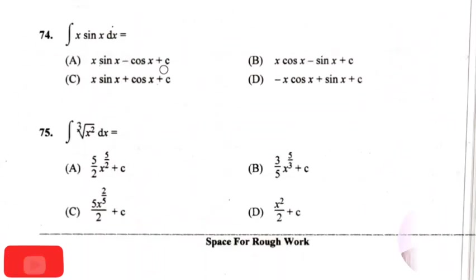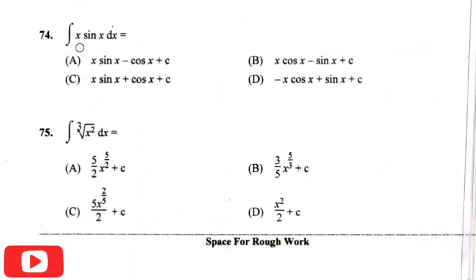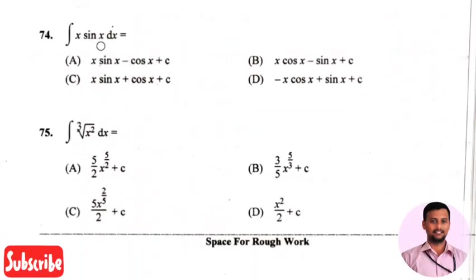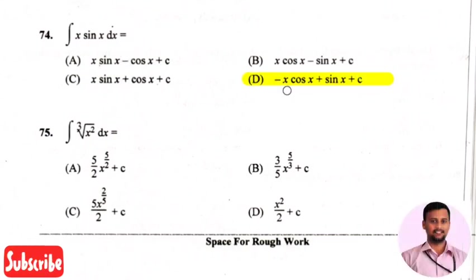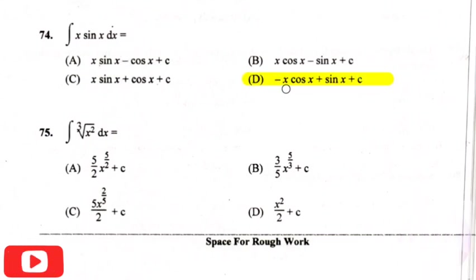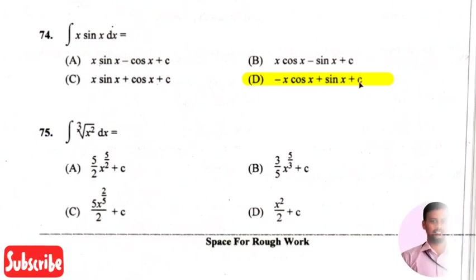The next question: the integration of x times sin x times dx will equal? The right answer is option 4, that is minus x times cos x plus sin x plus c.